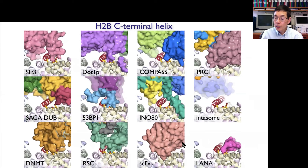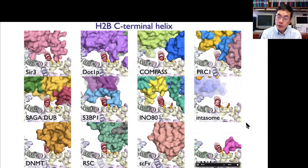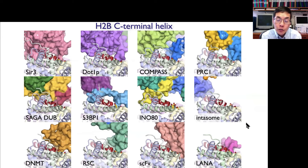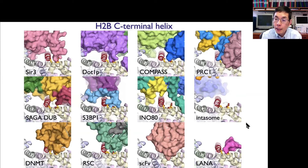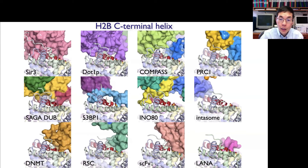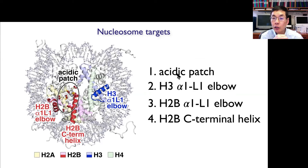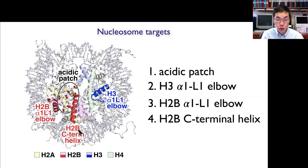The acidic patch is very close to the C-terminal helix, so it's important to note that in many structures interactions aren't solely due to the acidic patch — there are significant additional interactions happening nearby. Previously many of us focused only on the acidic patch, but what I hope I've shown is that there are additional interactions with the alpha-1, L1 elbow of histone H3 and H2B, and with the H2B C-terminal helix.